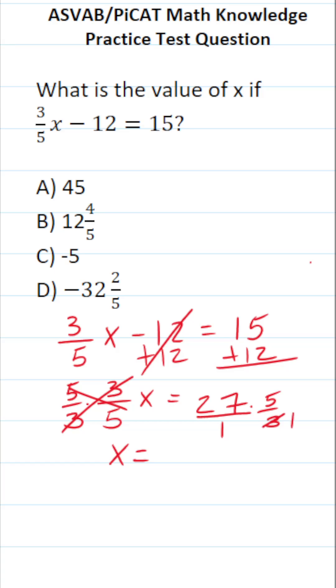3 goes into 3 one time. 3 goes into 27 nine times. This becomes 9 over 1, which is just 9.